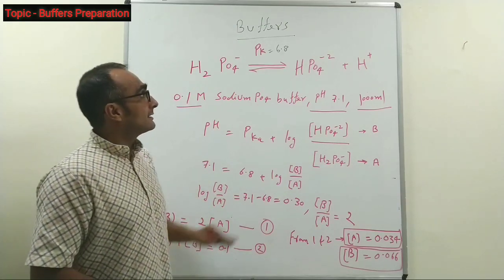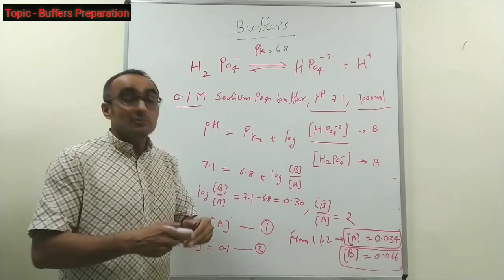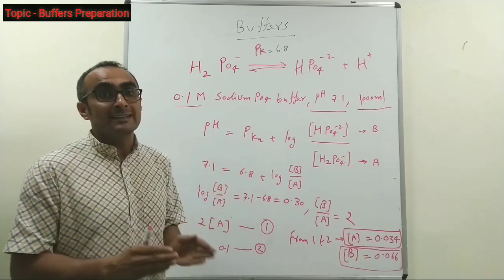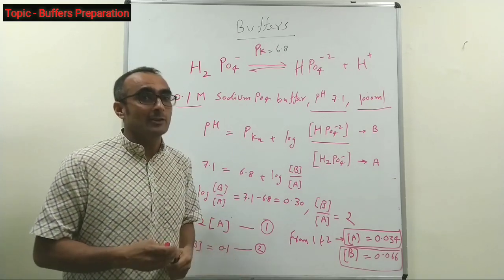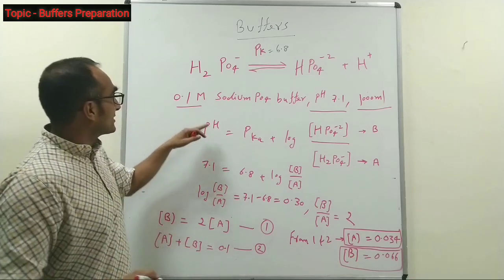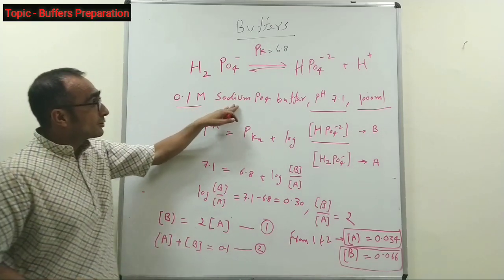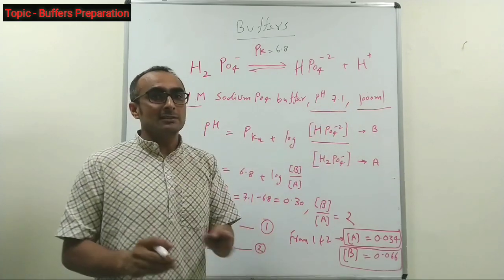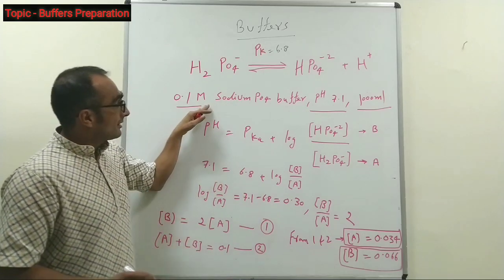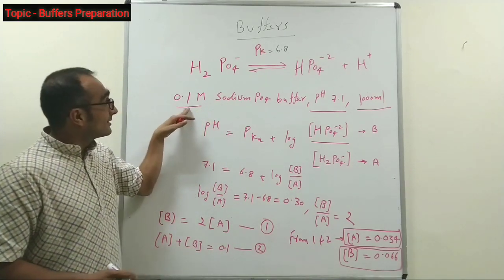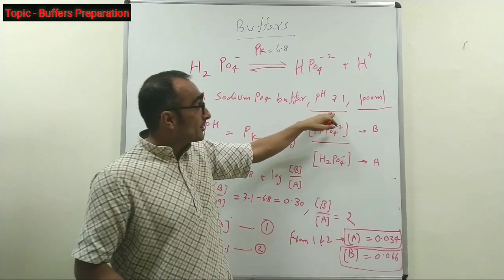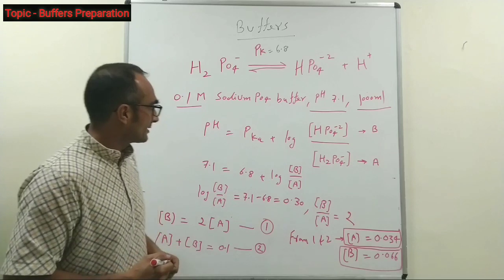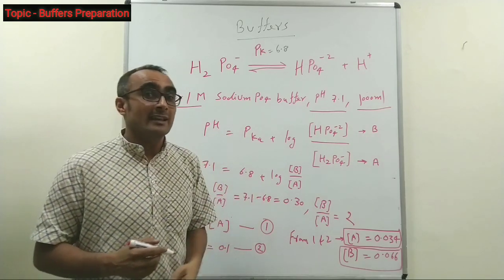The pKa value for phosphoric acid is 6.8, meaning when preparing phosphate buffer you can choose a pH range between 5.8 to 7.8 only. For example: you want to prepare 0.1 molar sodium phosphate buffer at pH 7.1 with a volume of 1 liter (1000 ml). These three things — concentration (ionic strength), the pH value you want, and the volume you want to prepare — must be defined before making any buffer.